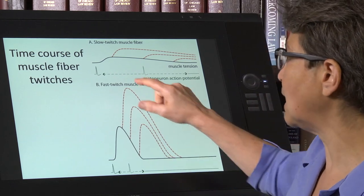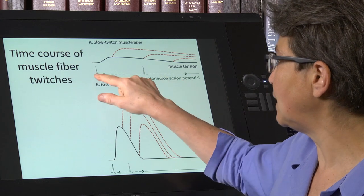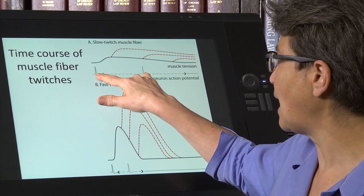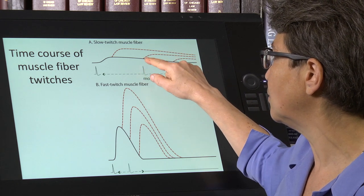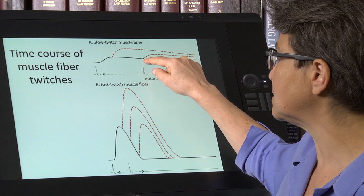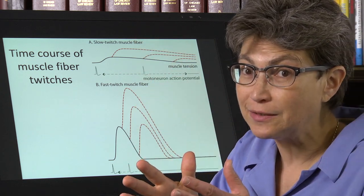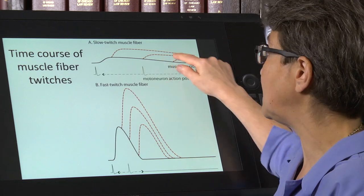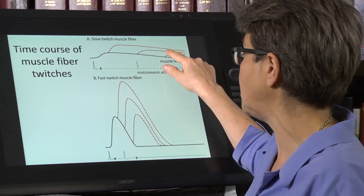And as a consequence, an action potential that happens, say, 50 milliseconds later will still affect this muscle when the fiber is already partially contracted. Okay, so it can summate. This is a summation of muscle tension. This can produce a summation of muscle tension.